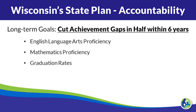So what is in our state plan? In terms of accountability, our long-term goal is to cut achievement gaps in half within six years. In particular, we are focused — as required under the law — on English language arts, math, and graduation rates.